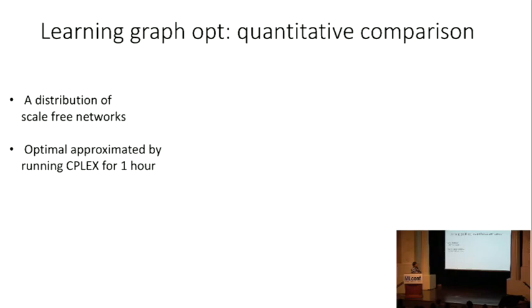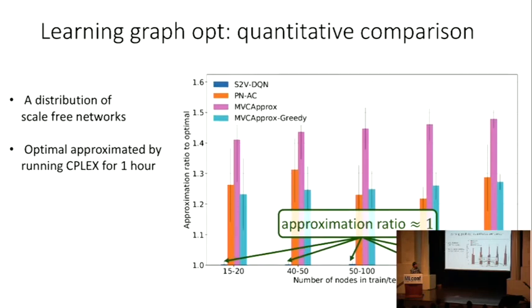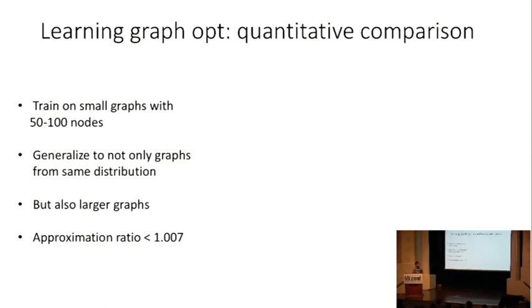Here are some experimental results. First, we sample some scale-free networks. On this bar plot, our performance is barely visible, because we can get almost perfect approximation ratio. The ratio equal to one means it's perfect. Typically, the ratio is larger than or equal to one. The lower, the better. This approach can not only generalize to the graphs from the same distribution, but it can also generalize to larger instances.